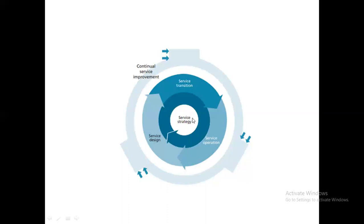In IT organizations, the CXO layer — CIOs, CFOs, CISOs — defines the strategy. They decide: should I merge with this company, acquire this company, expand into new businesses, or shut down a business? All those strategic questions about which way the company moves forward happen at this level. That is why service strategy is called the core of ITIL. Once strategy is decided, you then move into service design.